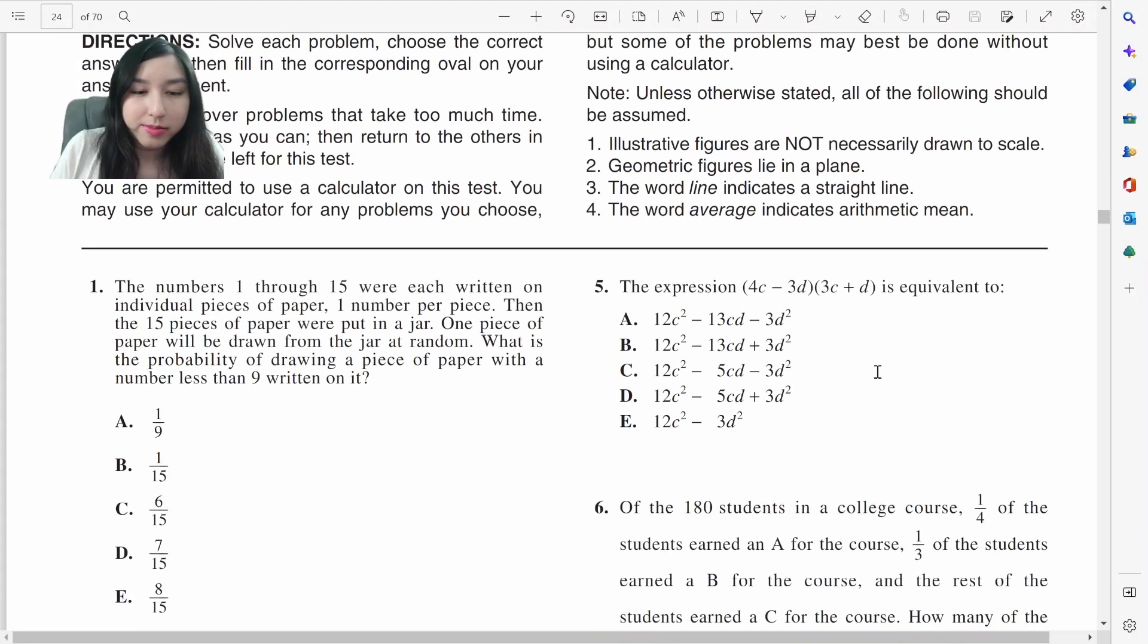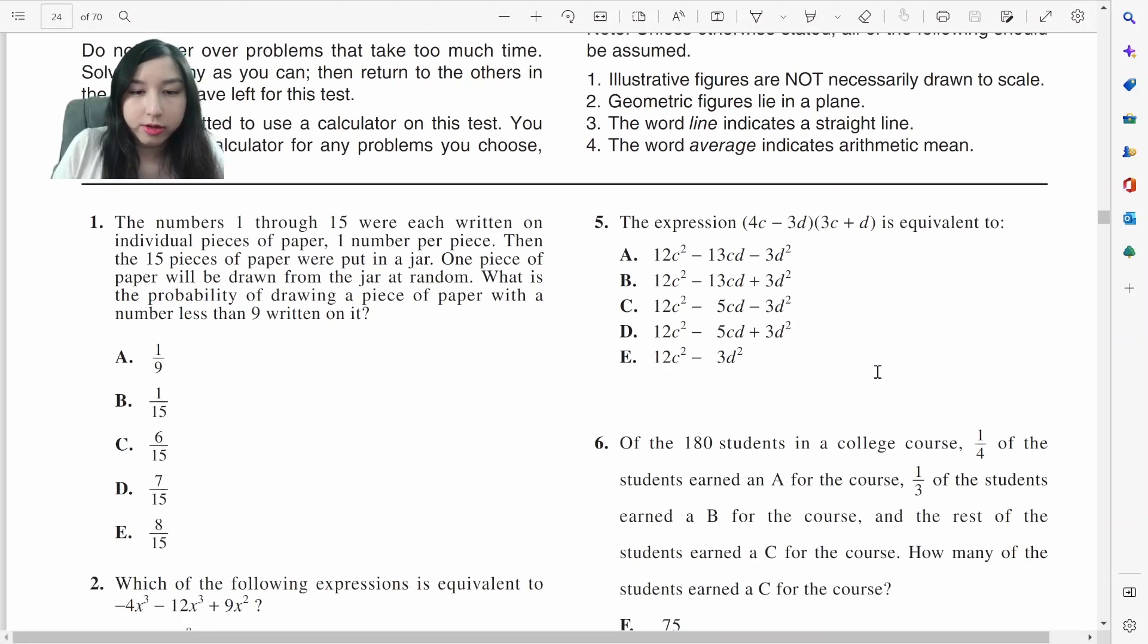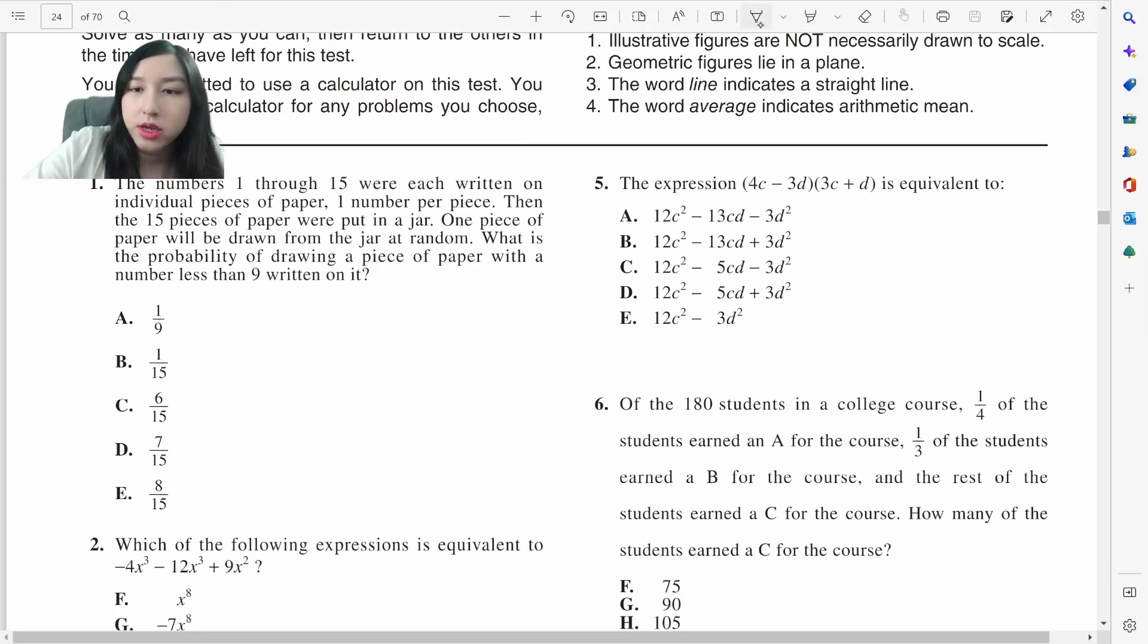The numbers 1 through 15 were written in pieces of paper. What is the probability of drawing a piece of paper with a number less than 9 written on it? A number less than 9 means 1 to 8, so there's just 8 numbers out of 15.